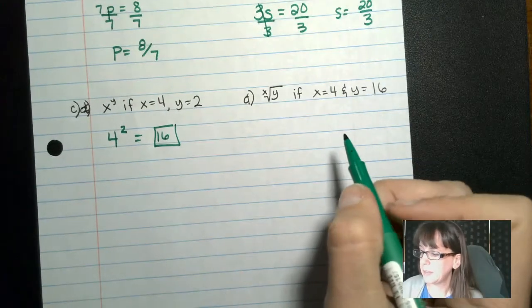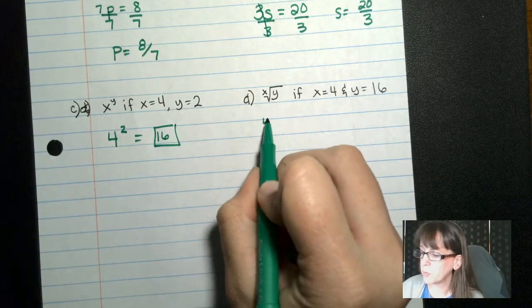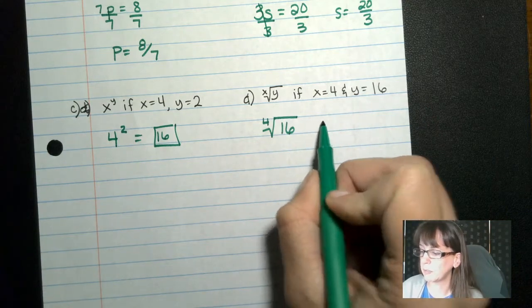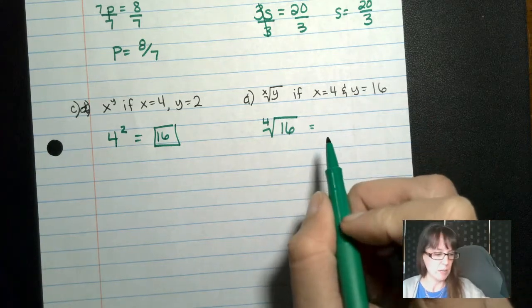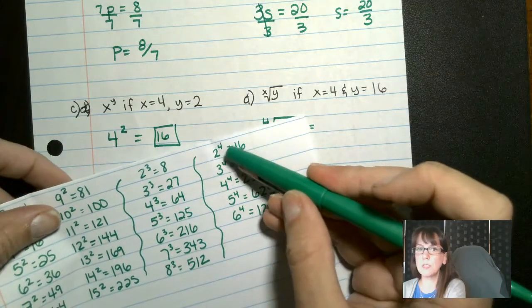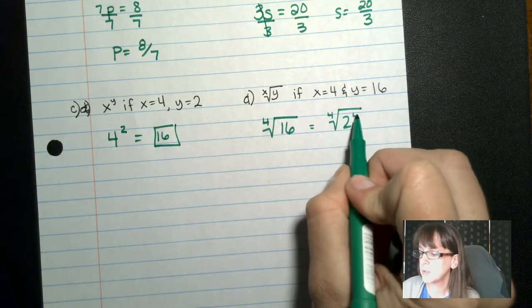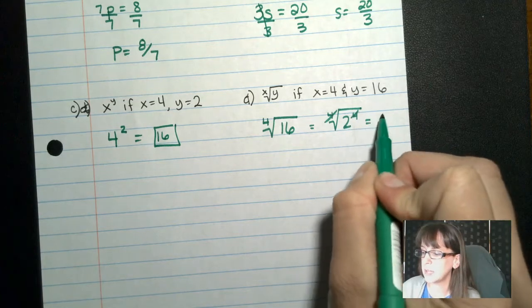And then we have 4th root of 16. So we go back and we look at our 4th root, and we see, okay, in the 4th root, if we have 2 to the 4th power, that gives us 16. So the 4th root of 2 to the 4th power. Cancel. Cancel. We end up with 2.